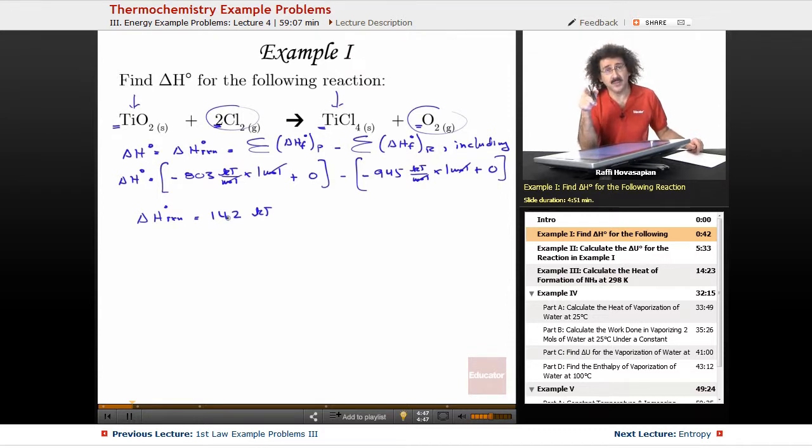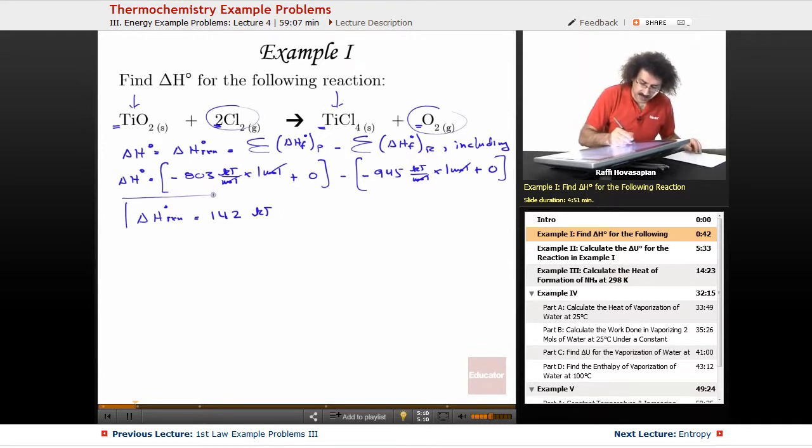So later on, when we actually get to the equation that you're familiar with, the delta G equals delta H minus T delta S, when you're mixing those up, when you're working with entropy as well as enthalpy and free energy, we want to make sure the units match. So we either need to convert the enthalpy to joules or we need to convert the entropy to kilojoules. So 142, there you go. That's it.